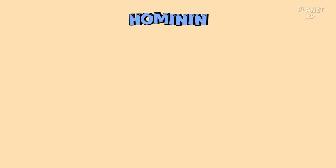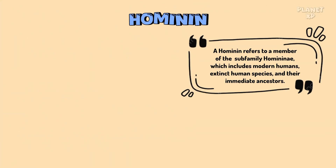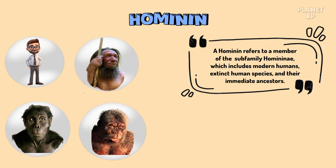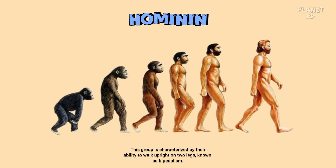What is a hominin? A hominin refers to a member of the subfamily Homininae, which includes modern humans, extinct human species, and their immediate ancestors. This group is characterized by their ability to walk upright on two legs, known as bipedalism.